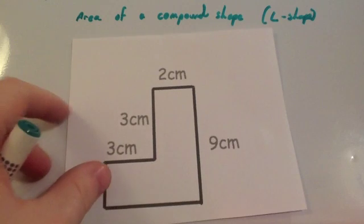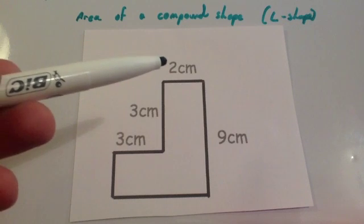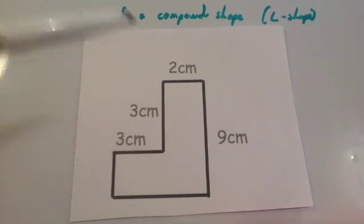So we've got a typical compound shape or an L-shape, backwards there, and we've got some measurements. So we've got the top's 2cm, the height of the whole thing's 9, this bit's 3 and this part's 3.